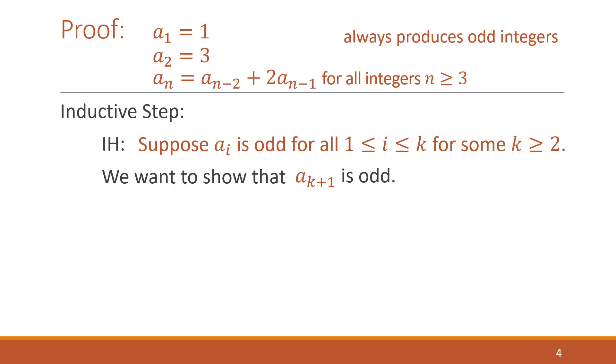Okay, so we want to show that a of k plus one is odd after assuming this whole range of values, one through k, a of one through k is odd. Well, let's use our recurrence relation. So we know that a of k plus one is going to equal a of k minus one plus two of a sub k using this recurrence relation.